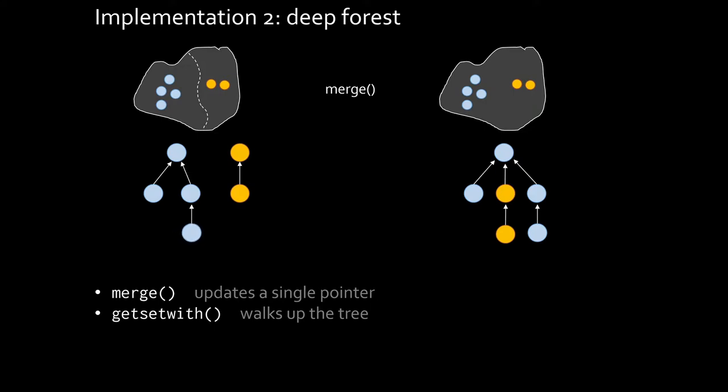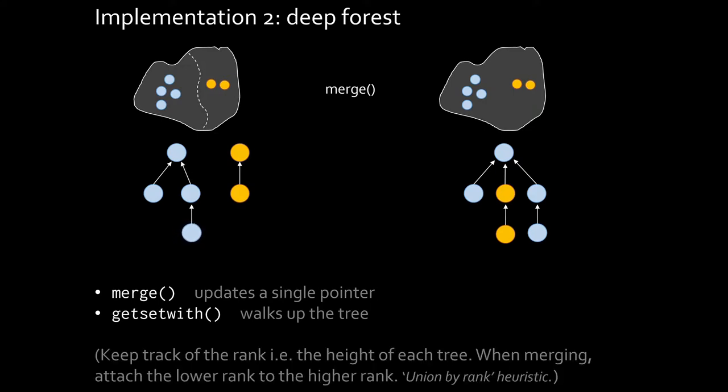It suggests an obvious heuristic to speed things up. Let's keep track of the rank. Another word for rank is the height of each tree. And when we merge, I'll attach the lower rank tree to the higher rank. So, in this particular case, the blue tree had rank 2. The yellow tree had rank 1. The yellow tree has lower rank. So, I'll make that the child of the tree with larger rank.